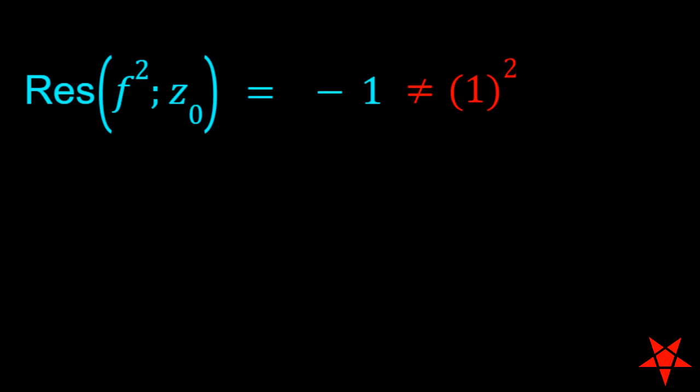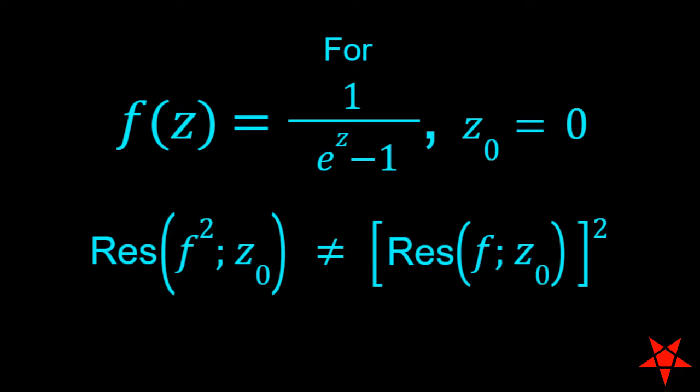Negative 1 is not the square of the residue of f of z at z0, which is equal to 1. Thus, we have shown here that for a given residue of f of z at z0, the residue of the square of f of z at z0 need not be the square of the original residue.